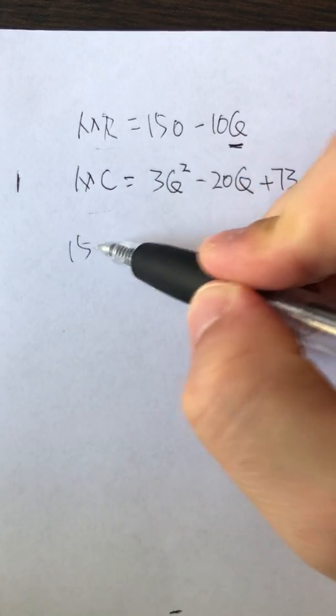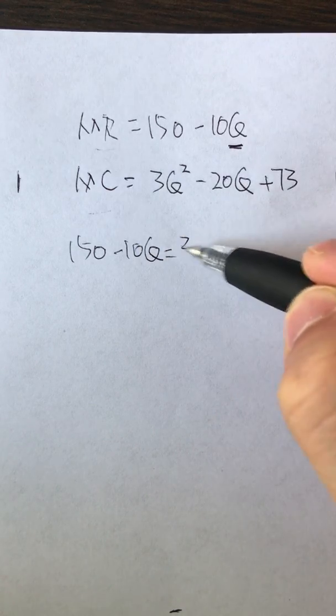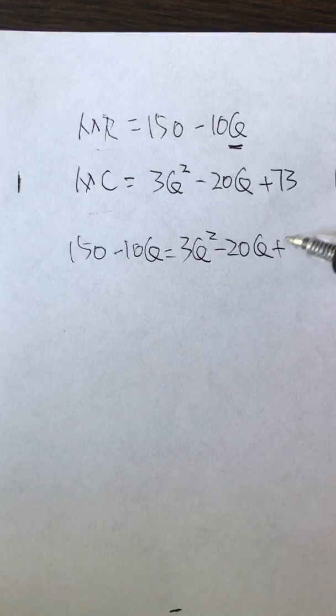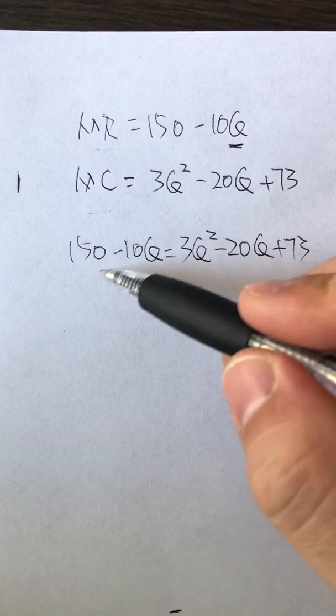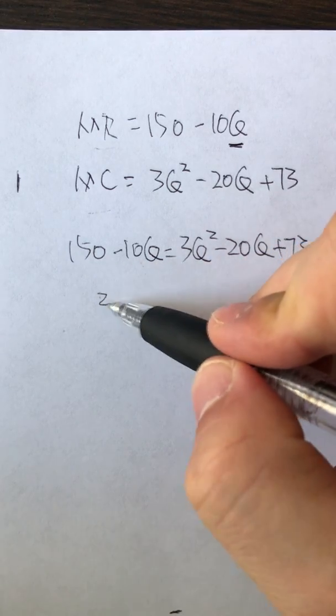First, solving by hand is pretty simple. 150 minus 10Q equals 3Q squared minus 20Q plus 73. We can rearrange this pretty easily by moving everything from the left to the right hand side.